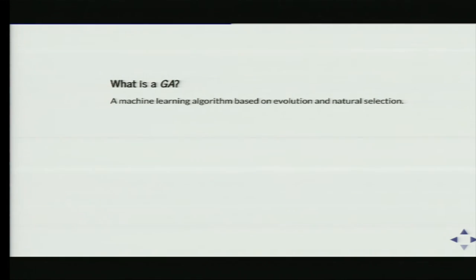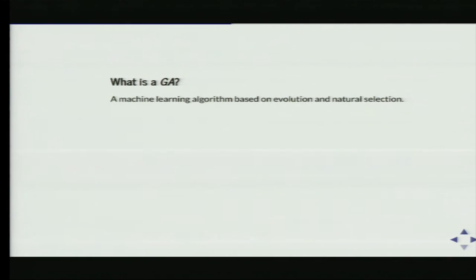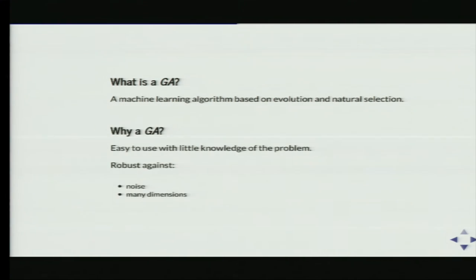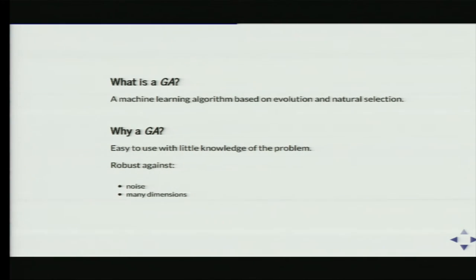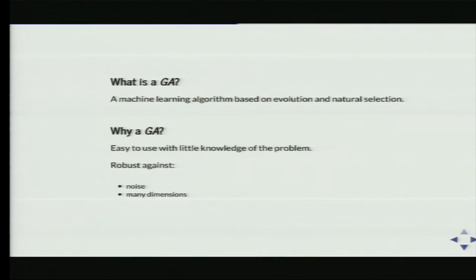Now let's move on to genetic algorithms. What is a genetic algorithm? It's a machine learning algorithm based on evolution and natural selection — basically how nature evolves. Why have I chosen a genetic algorithm? It's easy to use with very little knowledge of a problem, and it's very robust against noise and many dimensions, which will come in very handy.